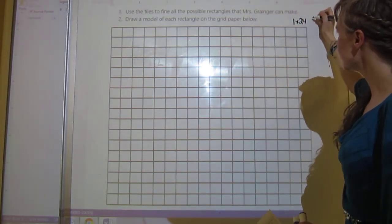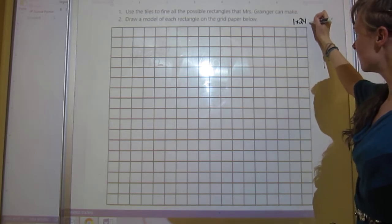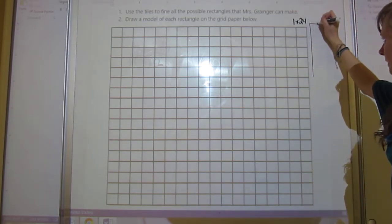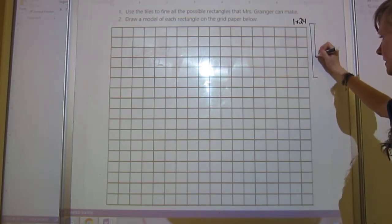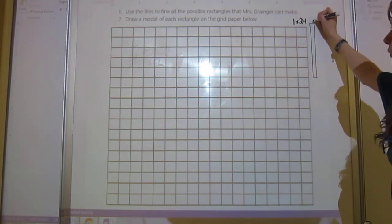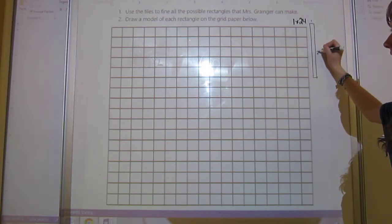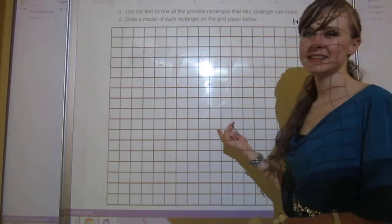One of the models that you could have made, but I didn't give you enough space on here, was a 1 by 24. So that's 24 long. I'm just going to draw a model right here. It would be a long skinny thing, even skinnier because it's so long. It would be 1 here and 24 here, but I didn't give you space, so that's okay.